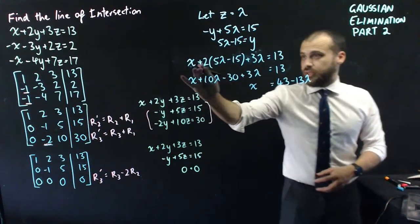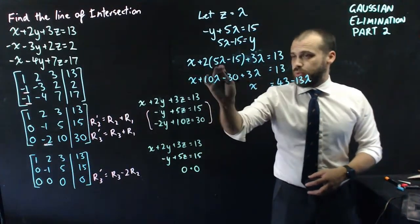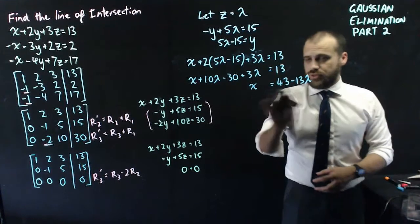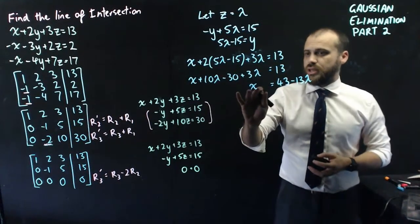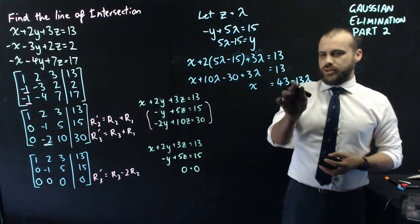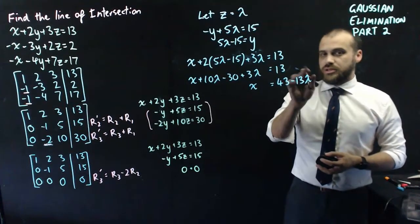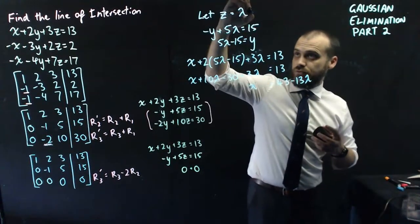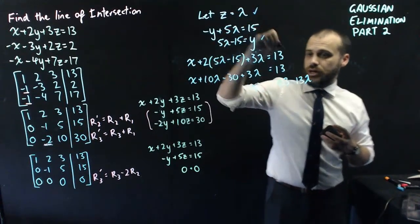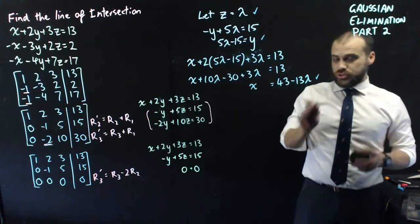Now what I can do is sub lambda for z and five lambda minus fifteen for y into this top equation and get some x value. And so when I do that, I get this equation, which I can then move everything across and simplify and get x equals 43 minus 13 lambda. So now I have an equation for z, an equation for y, and an equation for x, all in terms of lambda.